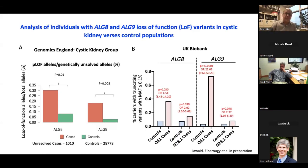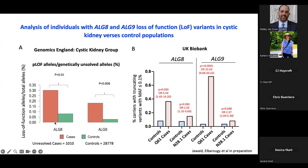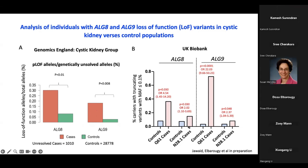In the Genomics England project, looking at the PKD population not resolved with PKD1 or PKD2 changes, ALG8 loss-of-function changes were enriched compared to the rest of the population, and likewise for ALG9. In the UK Biobank patients selected as having ADPKD, they were also enriched for loss-of-function changes in ALG8, as was the less specific 'cysts of the kidney' code. This was even clearer for the rarer ALG9.